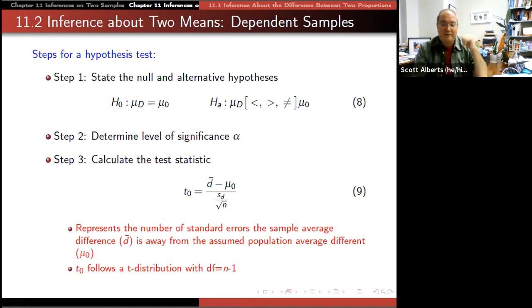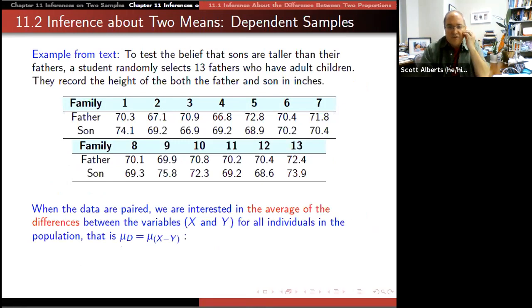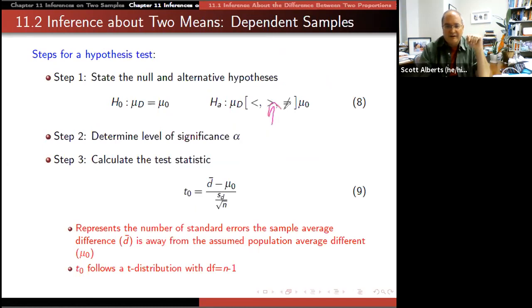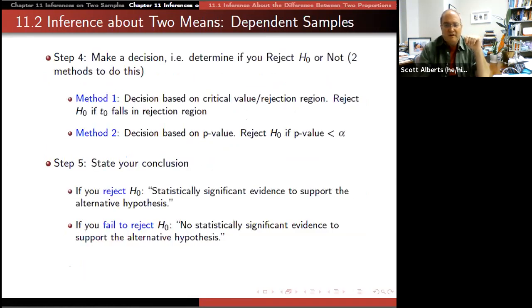We're still going to set up the problem the same way. We're going to have a null and an alternate hypothesis. In our story, she was looking at the sons are taller than their father, so that's a one-sided test. That's going to be a greater than. We're going to pick an alpha, and then we're going to calculate the value. Then we're either going to reject or not reject using a p-value. We're going to always use this method too in this class. Then we're going to state our conclusion. Either there was a statistically significant difference between fathers and sons, or there's not going to be a statistically significant difference between fathers and sons.